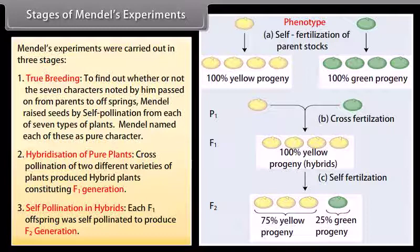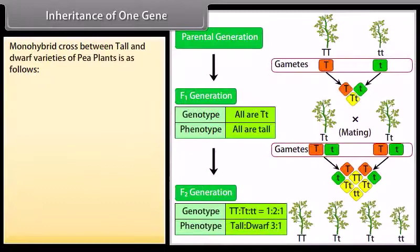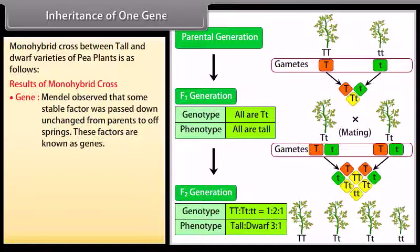Inheritance of one gene. A monohybrid cross between tall and dwarf varieties of pea plants is as follows. Gene: Mendel observed that some stable factor was passed down unchanged from parents to offspring — these factors are known as genes. Allele: genes which code for a pair of contrasting traits are known as alleles.